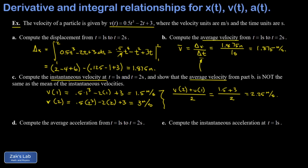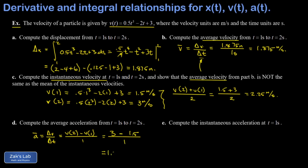In part d, we find the average acceleration from t equals one to t equals two. Average acceleration is the change in velocity over the change in time: [v(2) minus v(1)] over [2 minus 1]. v(2) is three and v(1) is 1.5, so the average acceleration is 1.5 meters per second per second, which we can also write as 1.5 meters per second squared.